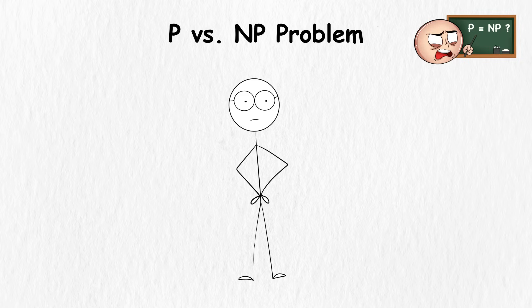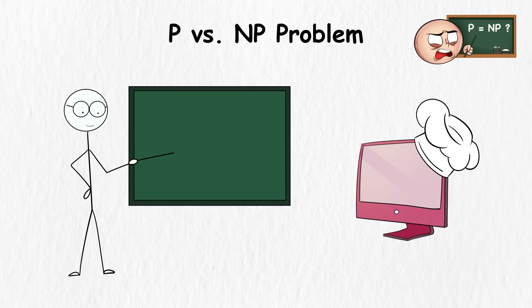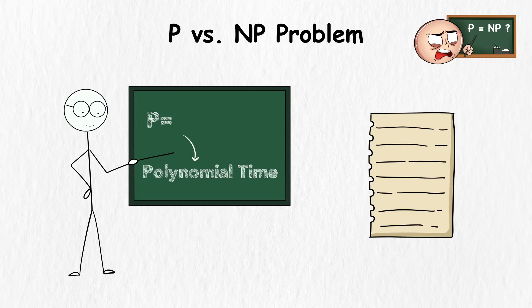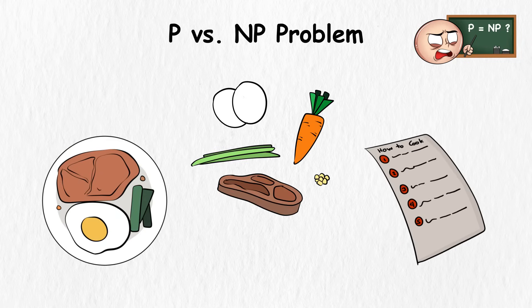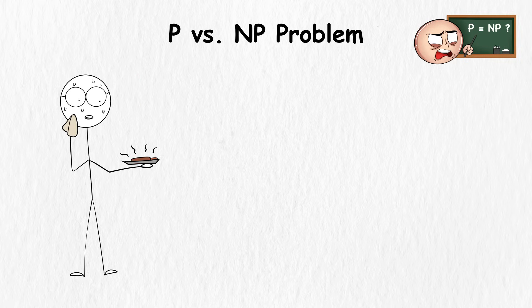P versus NP problem. Imagine your computer as a culinary genius. When a problem is classified as P, standing for polynomial time, it's like following a recipe for a simple dish. It has clear steps and clear ingredients. Before you know it, dinner is served without breaking a sweat.